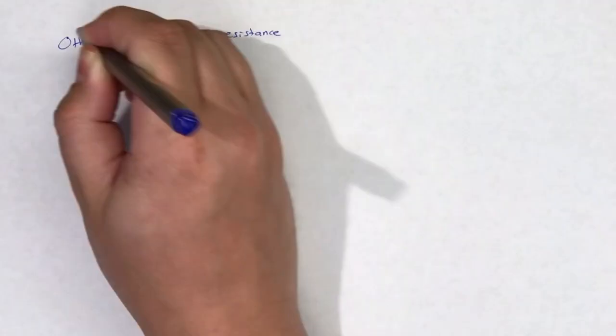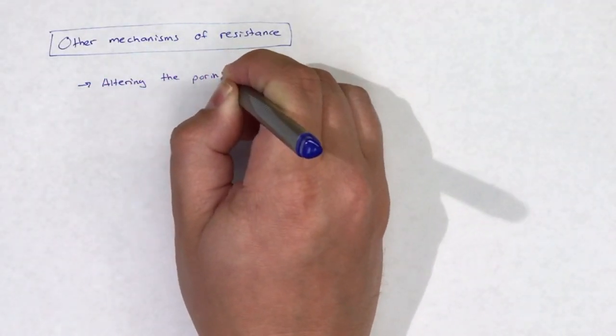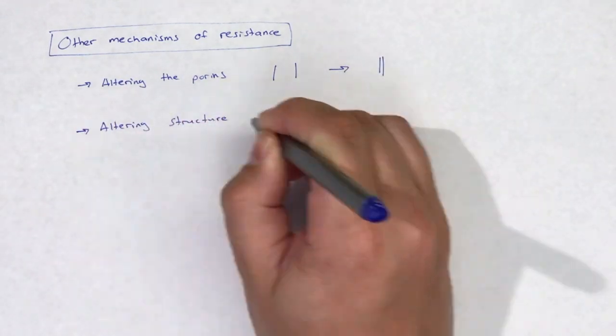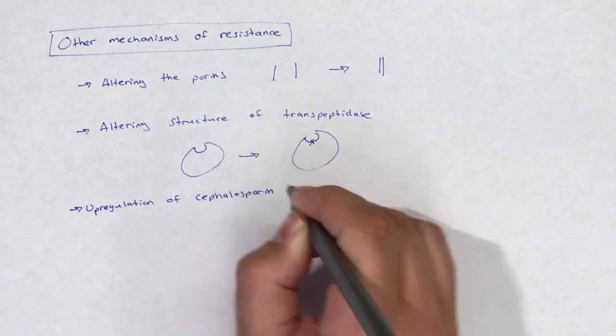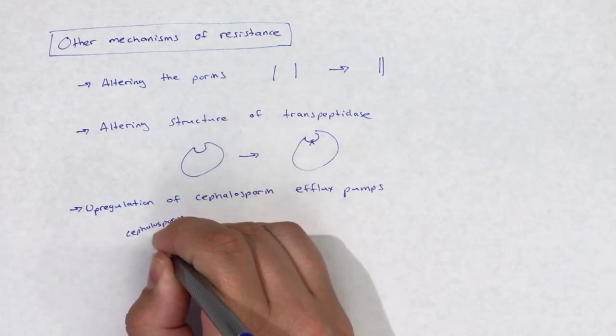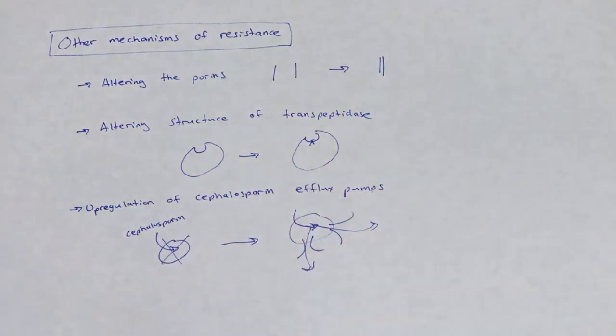In addition to beta-lactamases, other mechanisms of bacterial resistance to cephalosporins include altering porins, altering the molecular structure of transpeptidase, and the upregulation of cephalosporin efflux pumps.